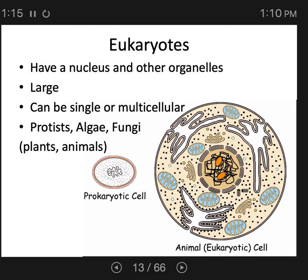Microbes can also be animals depending on your definition of microbe. There are certain parasitic worms called helminths that are so tiny you can't see them very well with the naked eye — you can really only observe them with a microscope. There are also tardigrades, or water bears. So there are microscopic animals. These are animals partly because of their DNA and what they're most closely related to based on genetics, and also because they're multicellular. These are eukaryotic cells, but they're not single-celled — they're multicelled microbes.